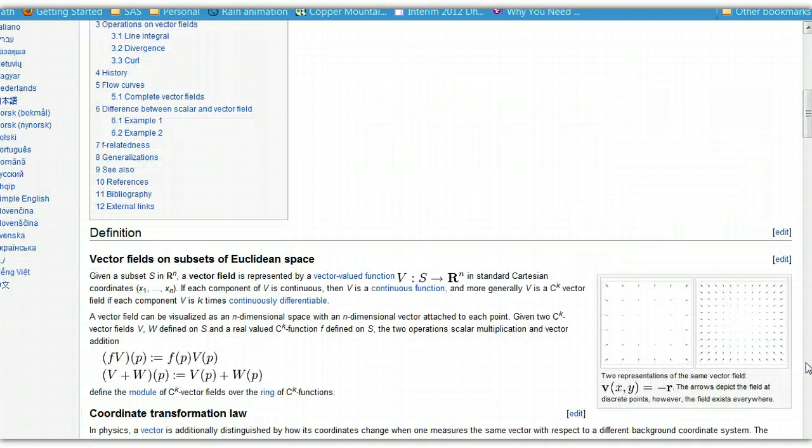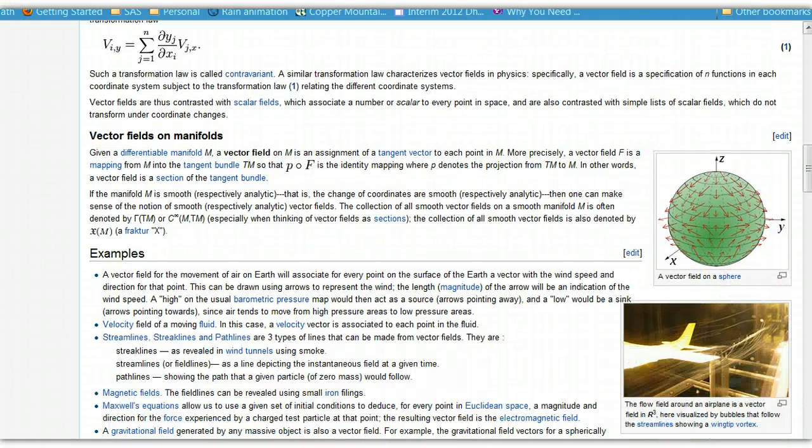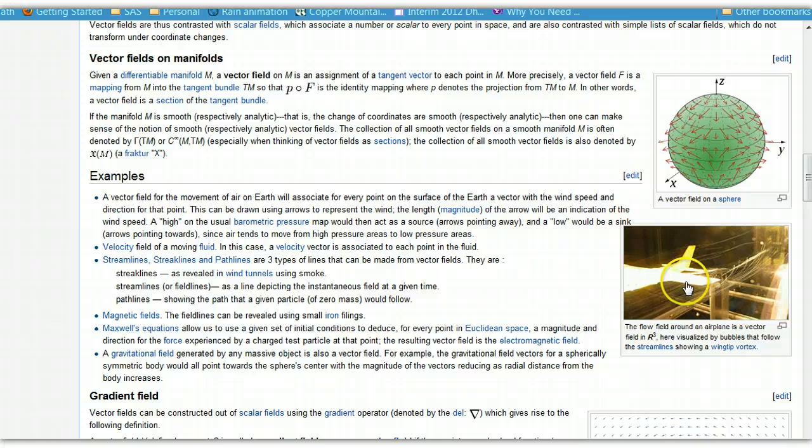There's some other pictures here. This is just off of Wikipedia. And so here's some other flows. A vector field on a sphere. And then they even talk about the flow of air around an airplane and a vector field for that. And so these occur all over us. And so we're going to figure out how to show these and develop these.